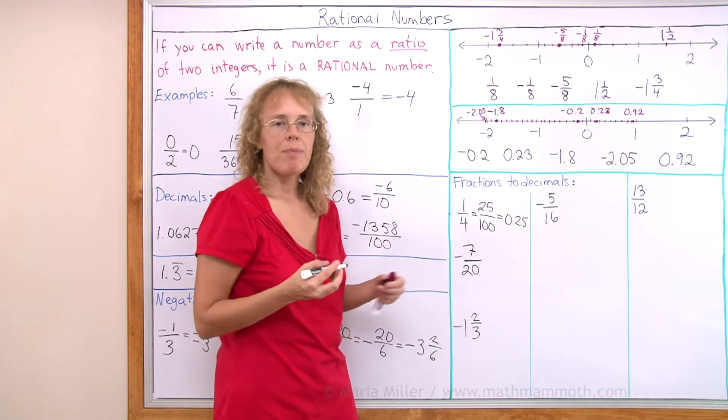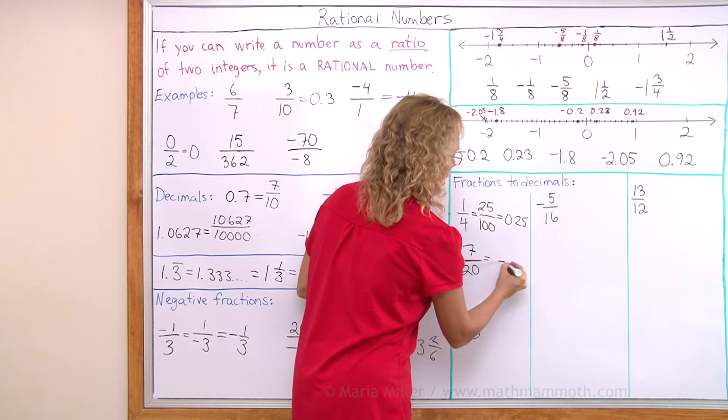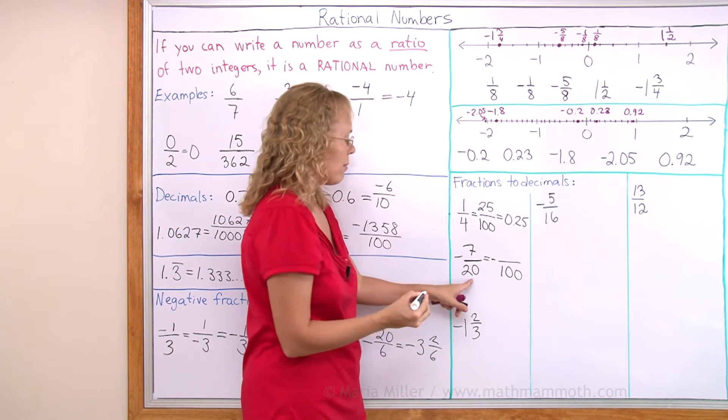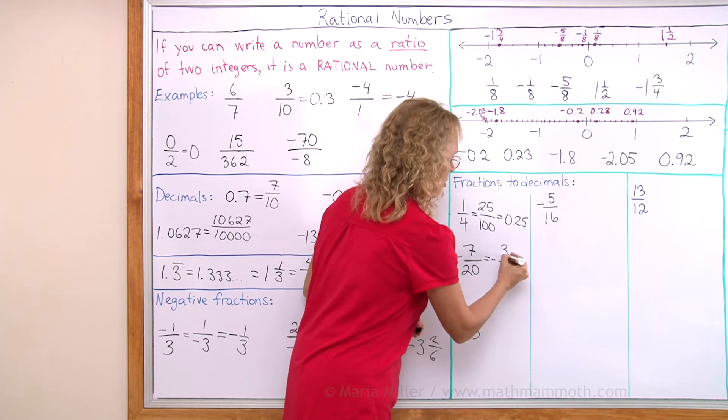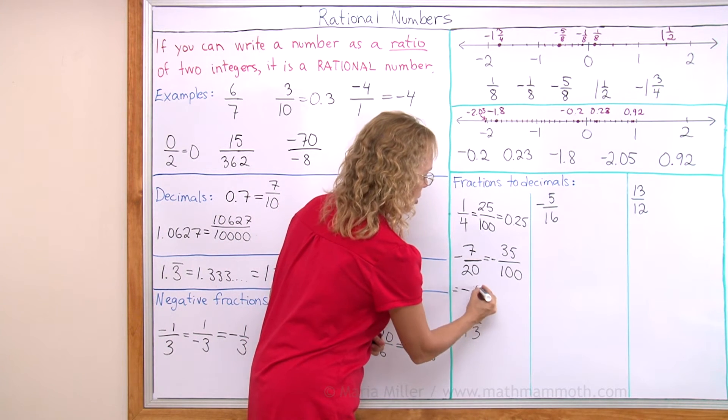Negative 7 over 20. Use the same technique. We will write it as an equivalent fraction with denominator 100. It's negative. Okay, 20 goes 5 times into 100, so 7 times 5 is 35. And now it is negative 0.35.